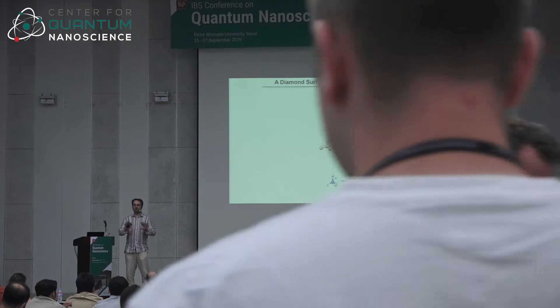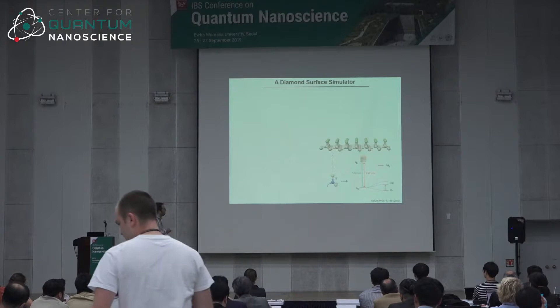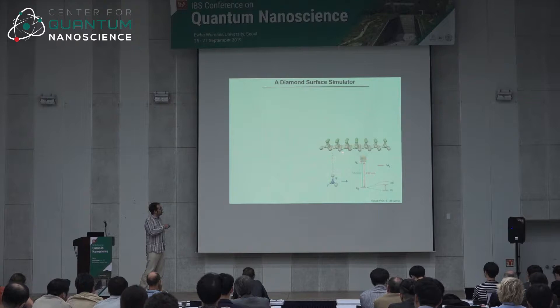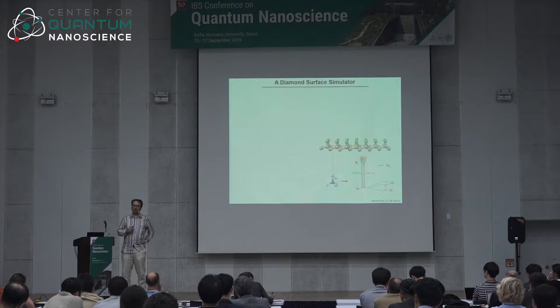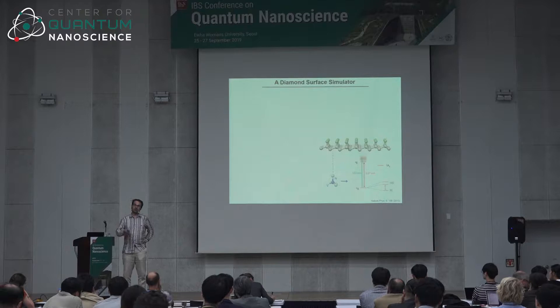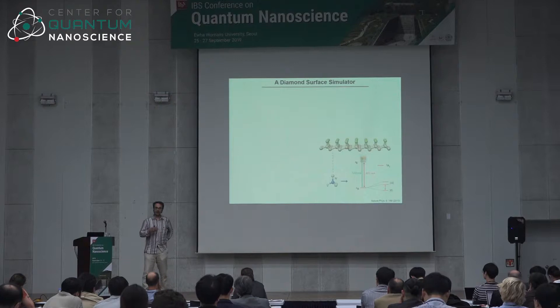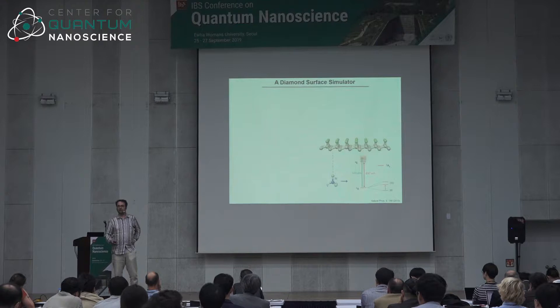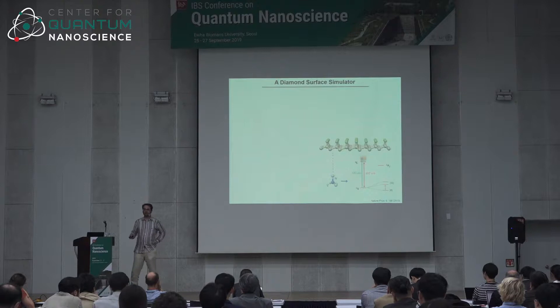I was wondering whether it might be possible to build a quantum simulator made out of nuclear spins that are chemically bound to the surface of diamond, and then to manipulate those systems using an NV center that is close to the diamond surface and close to these nuclear spins. These nuclear spins, because they are so close to each other — only about two and a half angstroms — actually have a quite strong interaction, relatively strong at seven kilohertz, which is much faster than the decoherence rate.